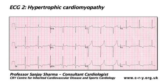This is the ECG of an exercising individual who was screened for underlying cardiac diseases. As with the athlete's ECG, this individual exhibits voltage criterion for left ventricular hypertrophy. However, there are three key abnormalities that would make me consider an alternative diagnosis to athlete's heart.